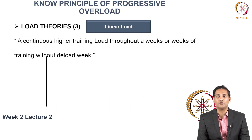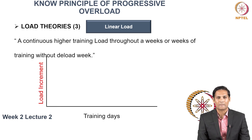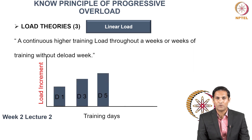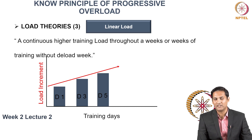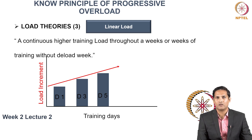A linear load is a continuously higher training load throughout the week or across weeks of training without a deload. On day one you give a stimulation higher than the previous week; day three is higher than day one; day five is higher than day three. Back to back you are giving a higher load compared to the previous session without any deload, thereby providing progressive overload session by session or week by week.